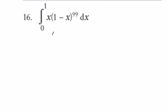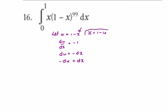Question 16. If we let u equal 1 minus x, then du/dx equals minus 1, or du equals minus dx, or minus du equals dx. We also need x in terms of u: rearranging gives x equals 1 minus u.